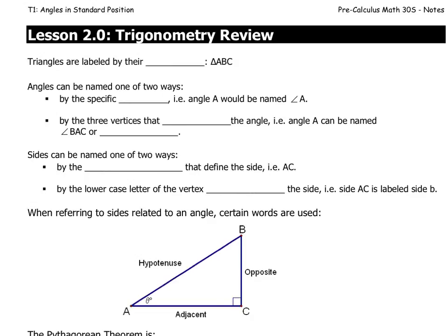Okay, so this is the trig review. Triangles are labeled by their vertices — those are the corners, we could say. For example, triangle ABC is the triangle that connects points A, B, and C.